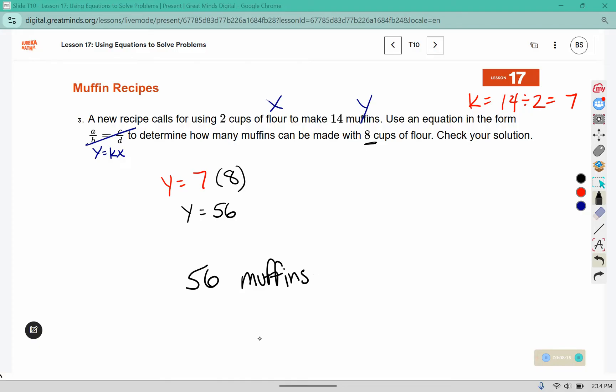Then it says check your solution. We can check our solution using that other strategy if you'd like. We had 14 over 2, and that should be the same as the y value over the x value. To get from 2 to 8, we would multiply by 4. And 14 times 4 also equals 56. So y has to be 56.